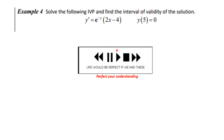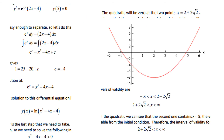Let's look at another example: solve y' = e^(−y)(2x − 4) with y(5) = 0. When you separate variables you get e^y dy = (2x − 4) dx. Integrating both sides: the antiderivative of e^y is e^y, and integrating the right side term by term gives x² − 4x + c. Using the initial condition x = 5, y = 0, we find c = −4. So the solution is e^y = x² − 4x − 4. We need to find the interval of validity and solve explicitly for y.